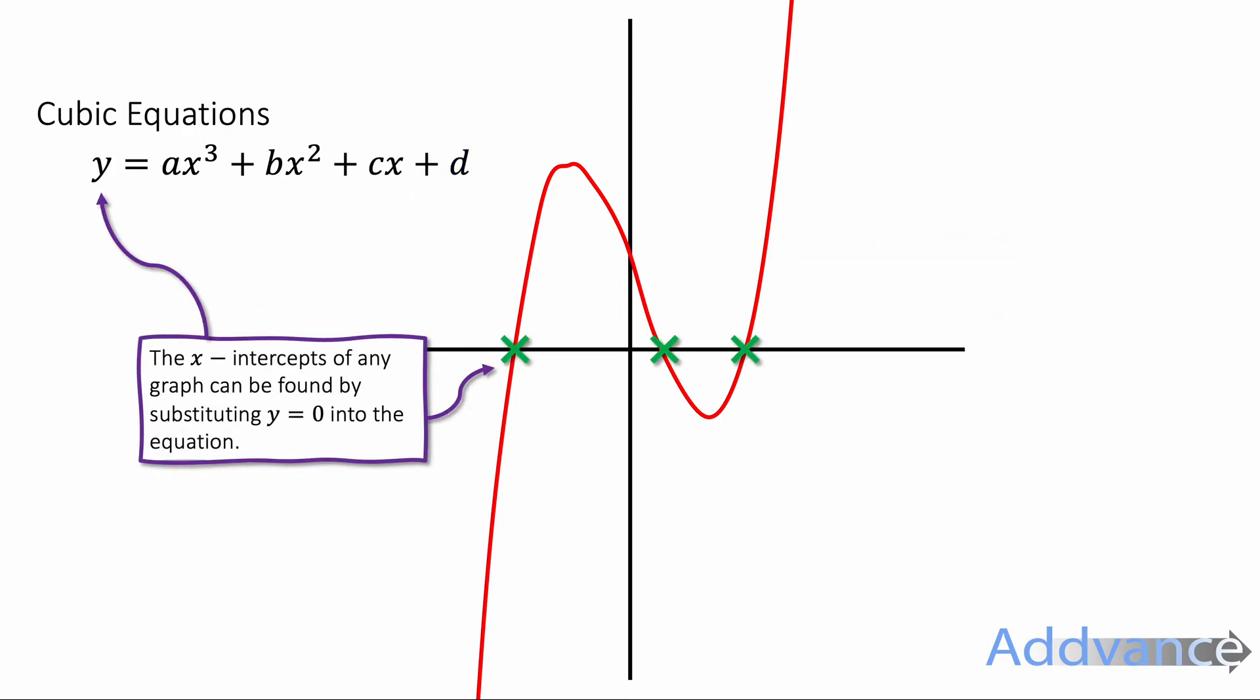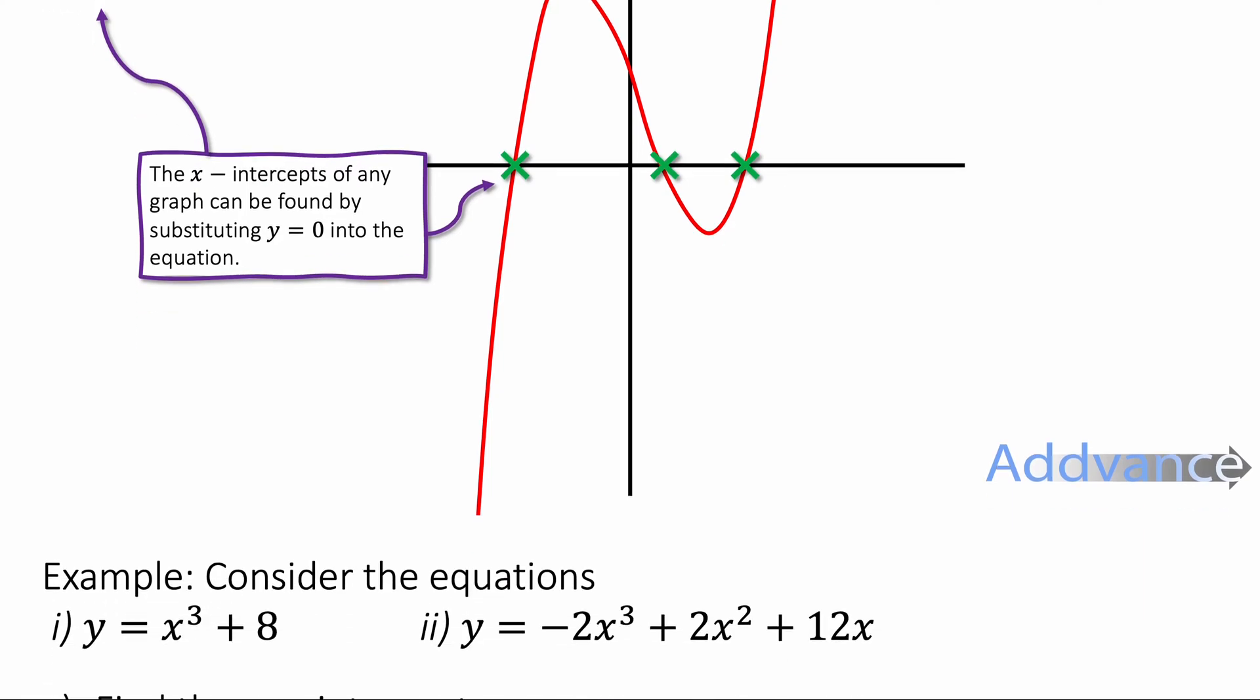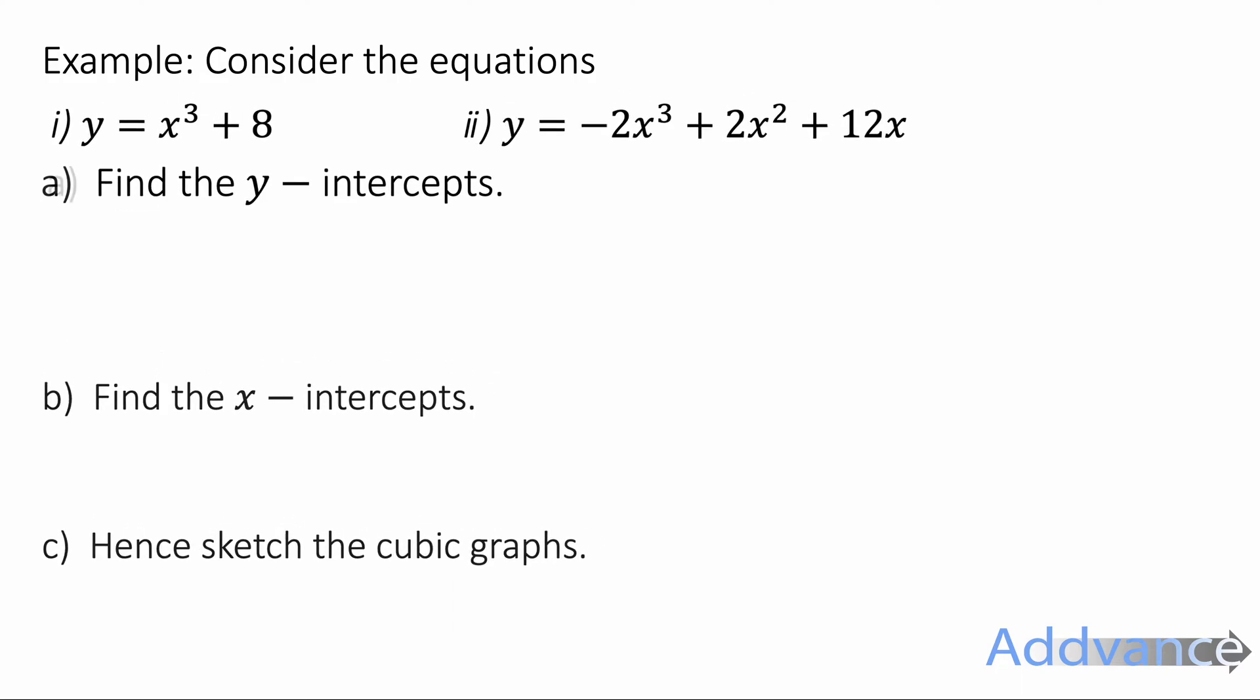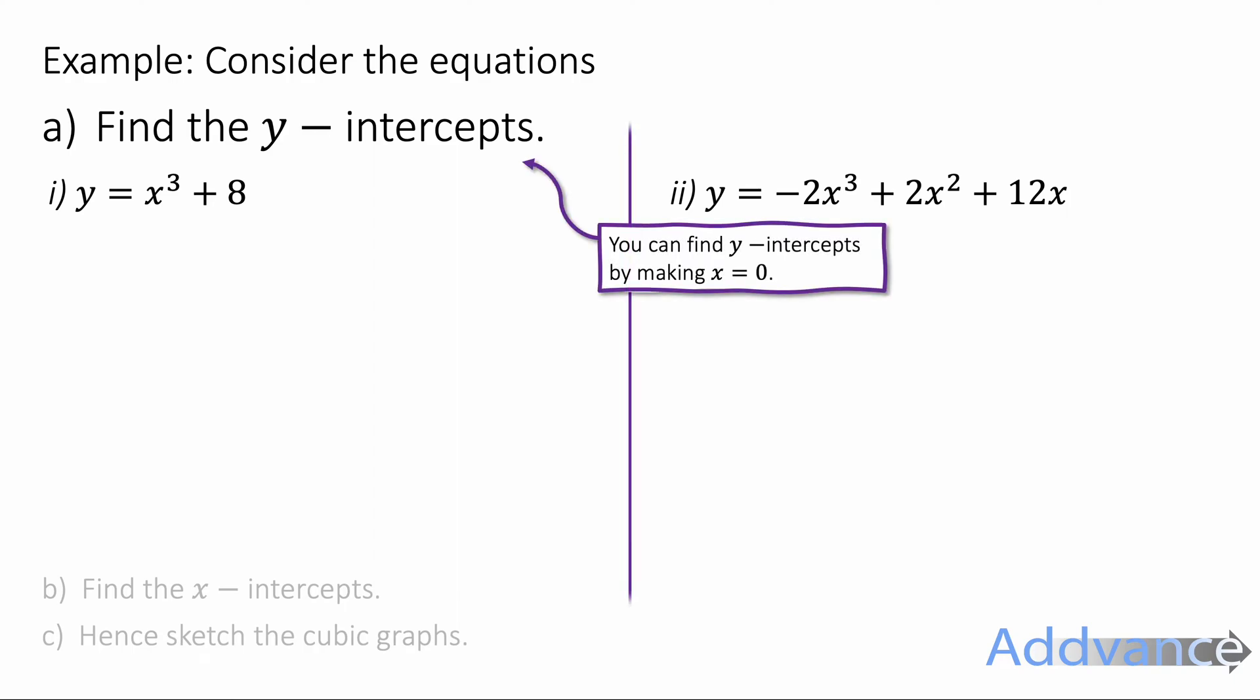Now, we can also find the x-intercepts of any graph by substituting y = 0 into the equation. Let's look at an example. We're going to consider the graphs of y = x³ + 8 and y = -2x³ + 2x² + 12x. We're going to start by finding the y-intercepts.